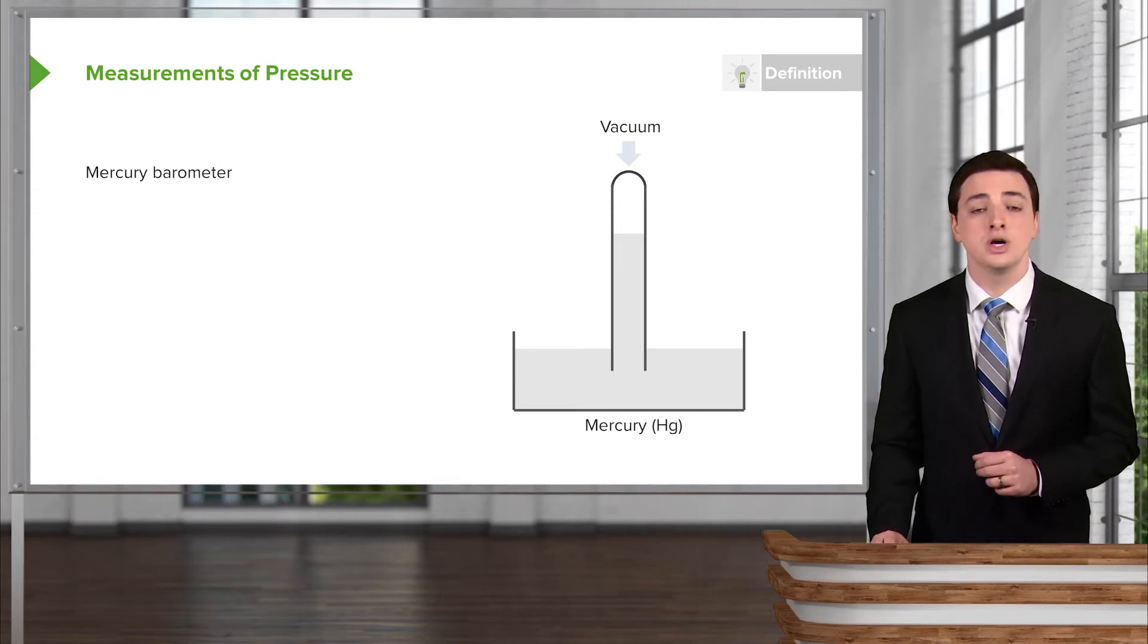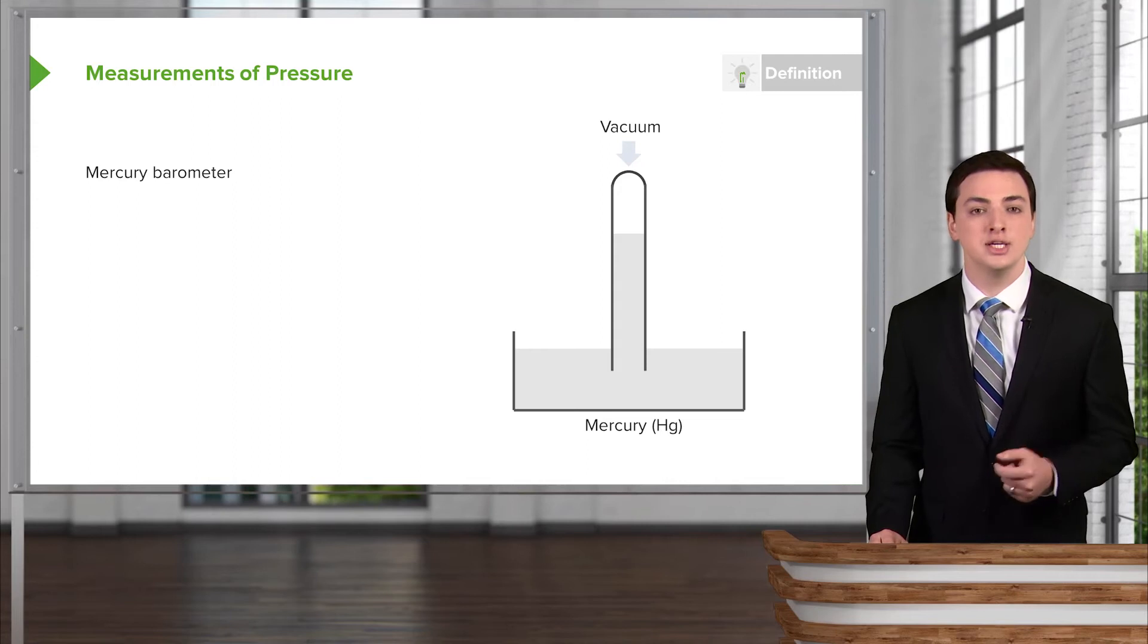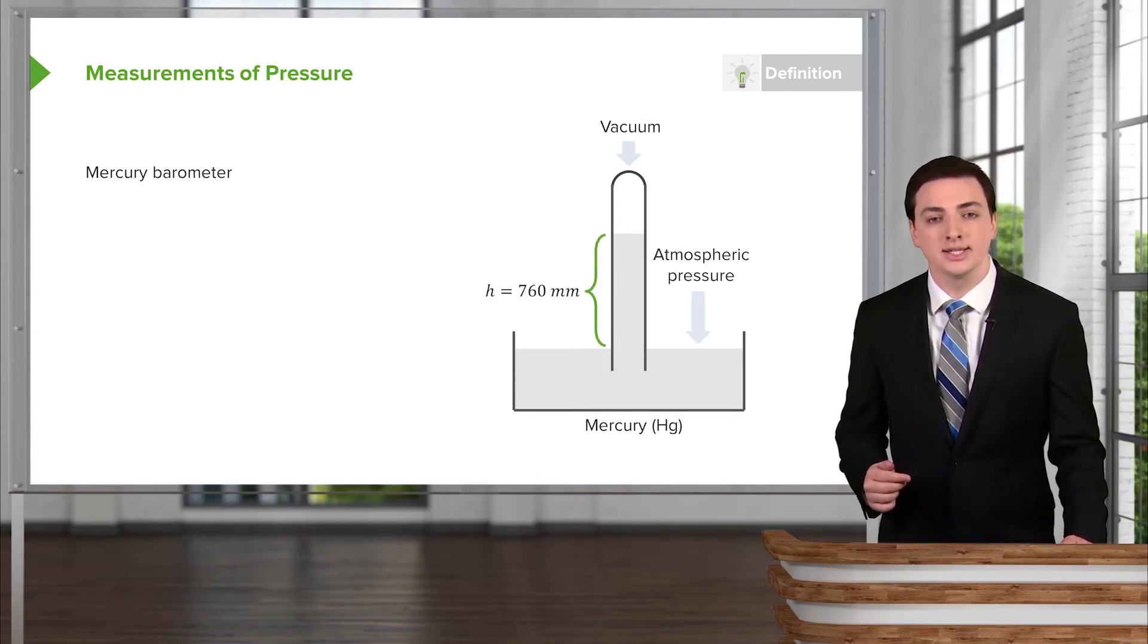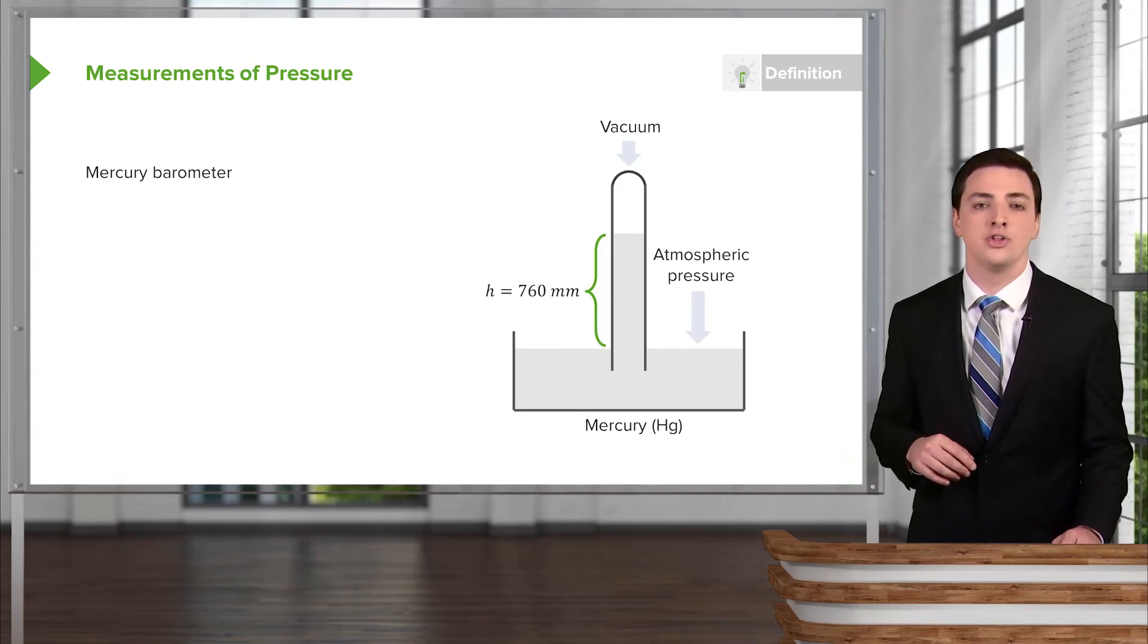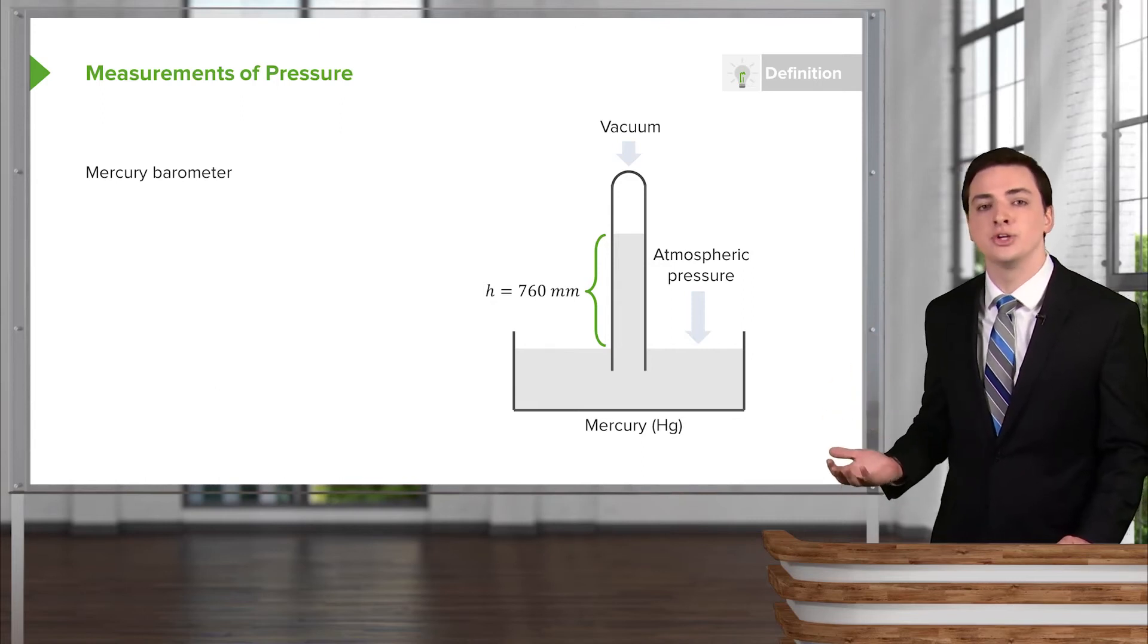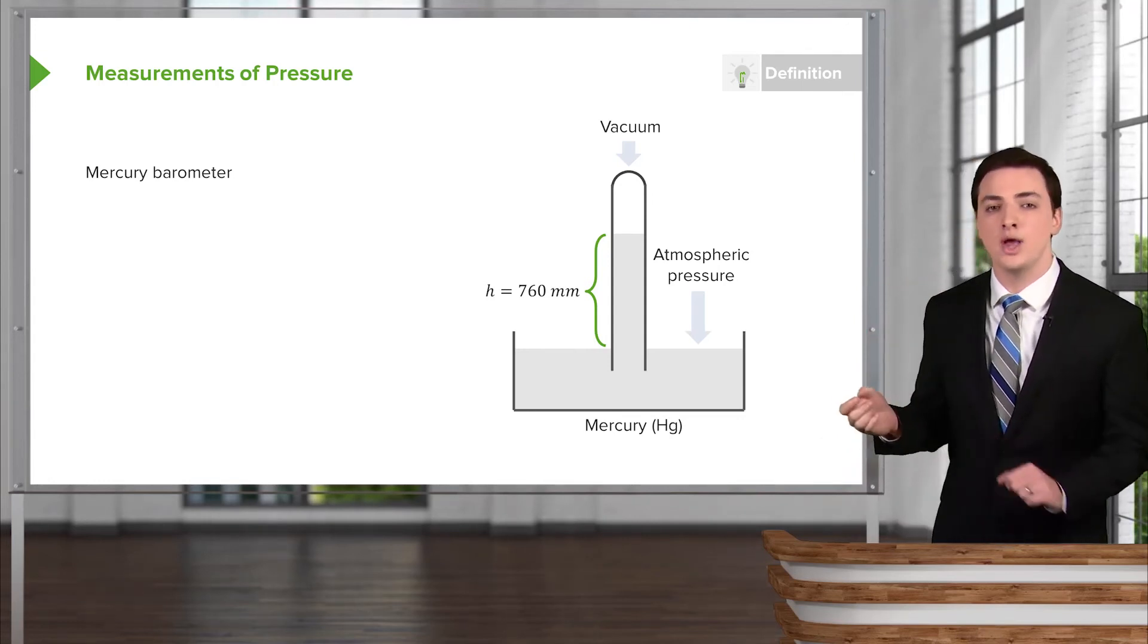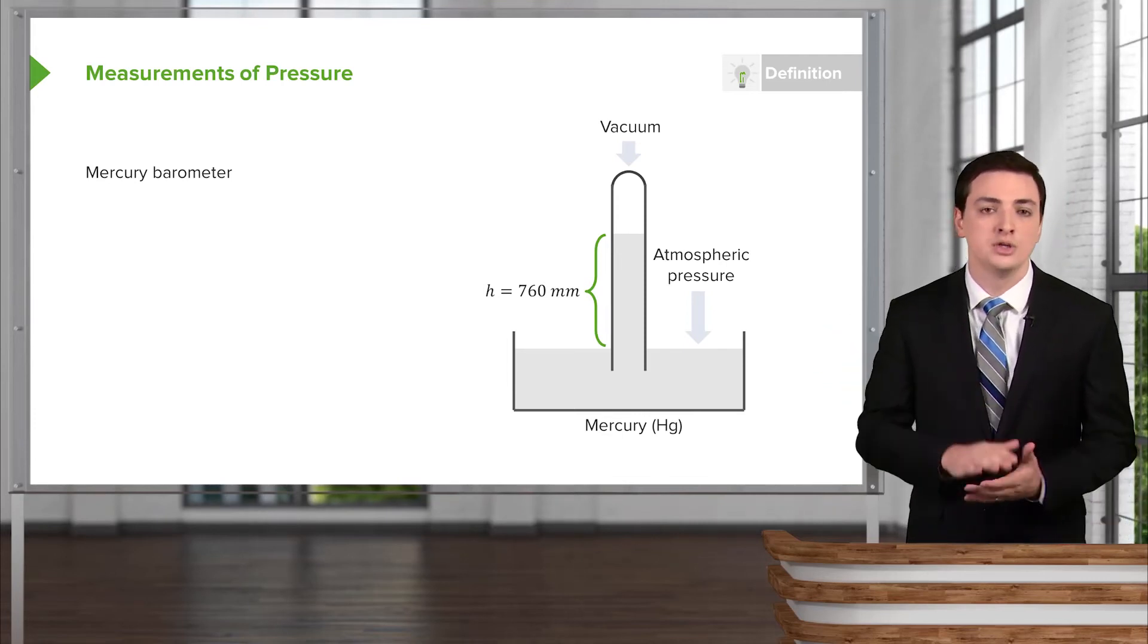And also something to know about mercury as we go forward is that its chemical name is Hg. So if you see Hg or mmHg, which we'll discuss in a moment, that means mercury or millimeters of mercury. In a barometer like this, what happens is we have the atmosphere pressure pushing down on the surface of all the mercury that's in the dish. And that force acting downwards on the mercury will cause the mercury in the tube to be lifted up, almost like a lever. It pushes down, causing the mercury in the tube to go up. And the reason it goes up is that, again, there's no air in the top of the tube on top of the mercury. So there's nothing else to react or to push the mercury down.